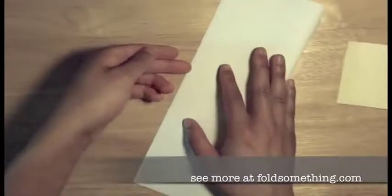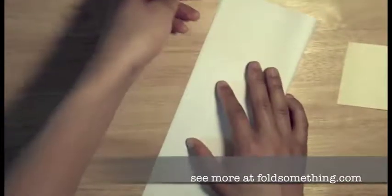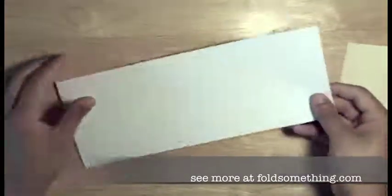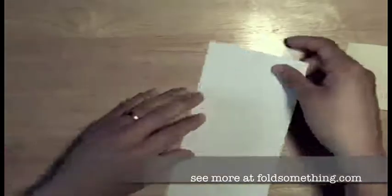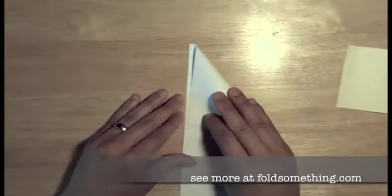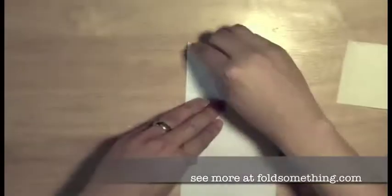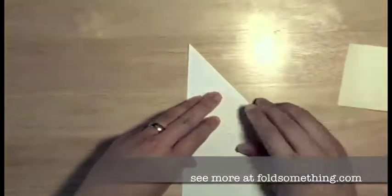We'll start by folding this paper in half hot dog style. Next we'll take the top right hand corner and fold it down to the left edge. Give that a good crease and then unfold.